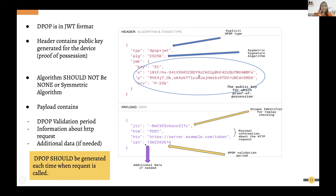During DPoP validation, the server first validates the type, then checks the expiry time, then performs signature validation by extracting the public key from the DPoP header itself. This allows the server to perform the signature validation using the public key available directly in the DPoP.